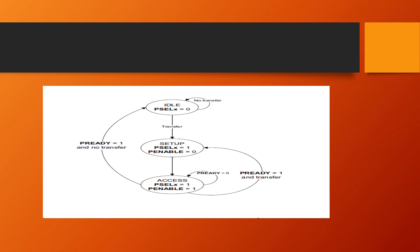The access phase continues until PREADY is asserted to one — only when PREADY is one can you exit the access phase. As long as PREADY is zero, the bus stays in the access state. When the transmission completes, PREADY goes to one, and then there are two options: move to the idle state if no further transfer is required, or move back to the setup state if there is another transfer to be made.